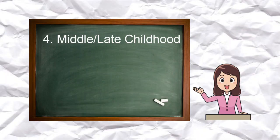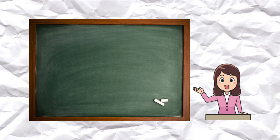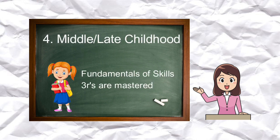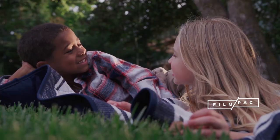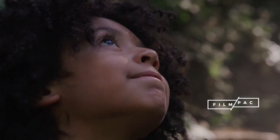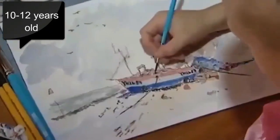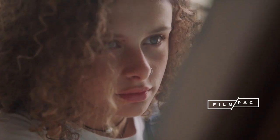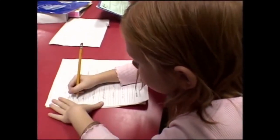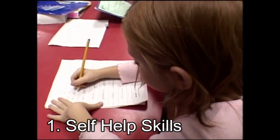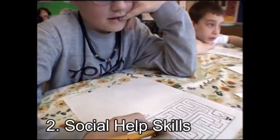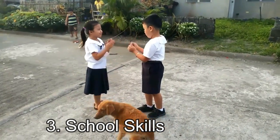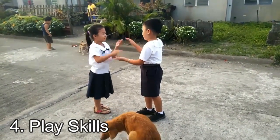Middle and late childhood covers ages 6 to 12 years old. At this stage, the fundamental skills of the three R's are mastered. The child is formally exposed to the larger world of its culture, achievement becomes a more central theme, and self-control increases. The skills of late childhood can be categorized roughly into four major types: first, self-help skills; second, social help skills; third, school skills; and lastly, play skills.